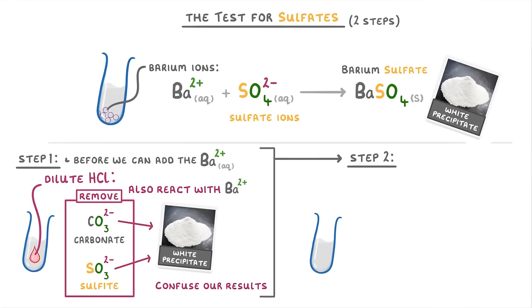Once we've done this and got rid of those impurities, then we can add the barium chloride solution, which is the important one that contains our barium ions. And so at this point, if any sulfate ions are present, we'll see the white precipitate form, and that will be our positive test result.